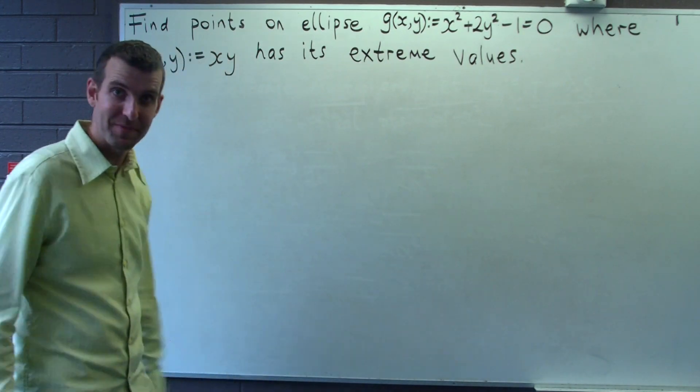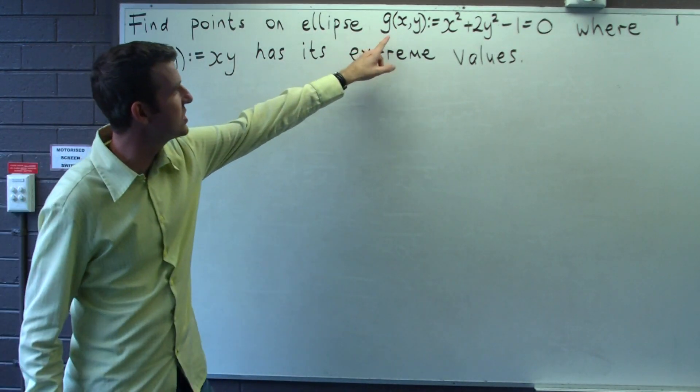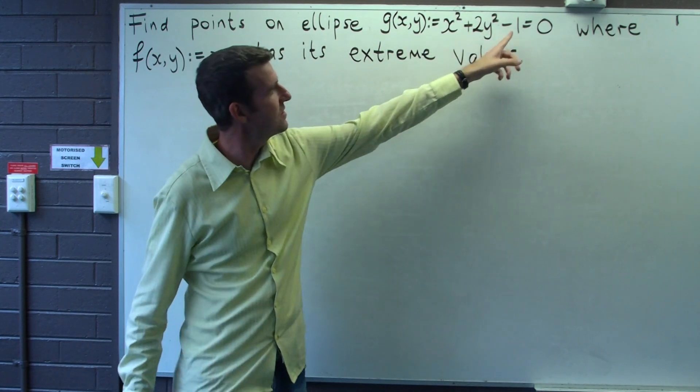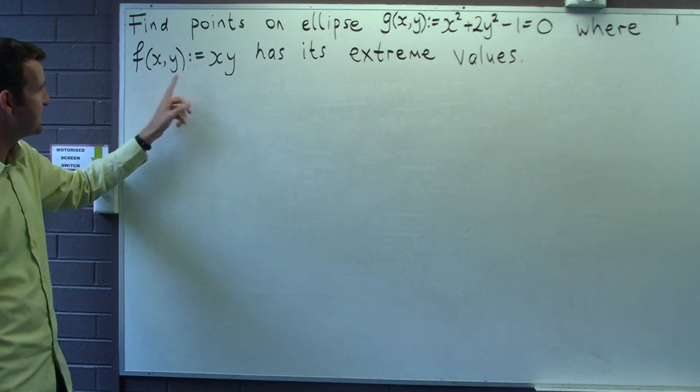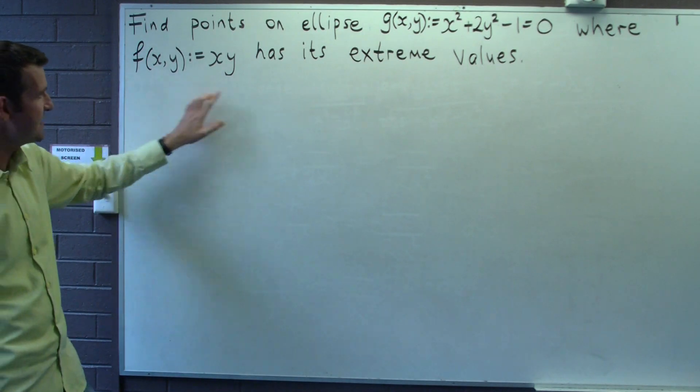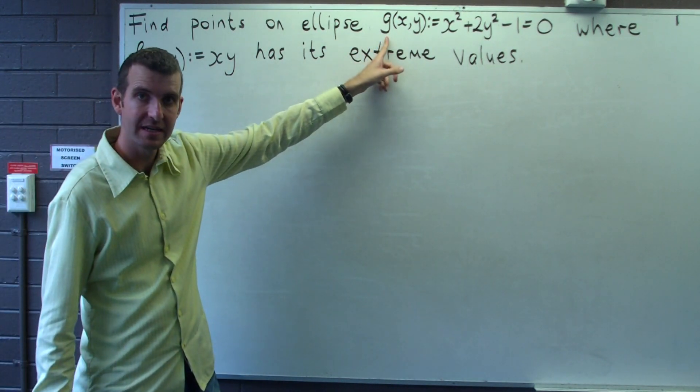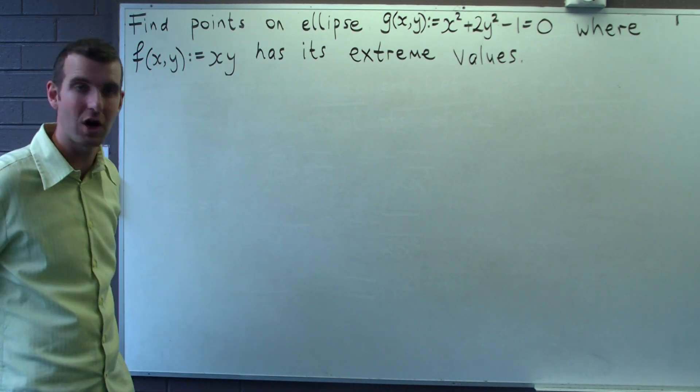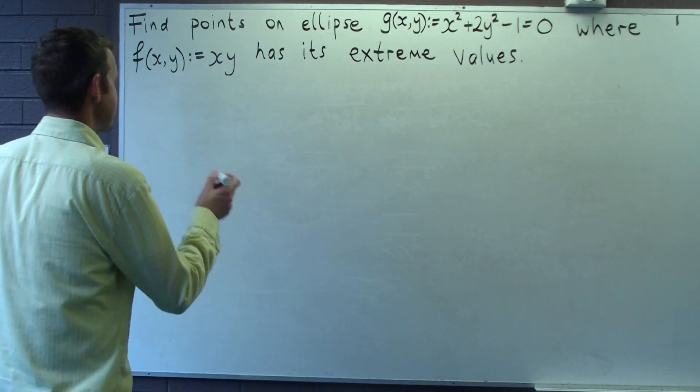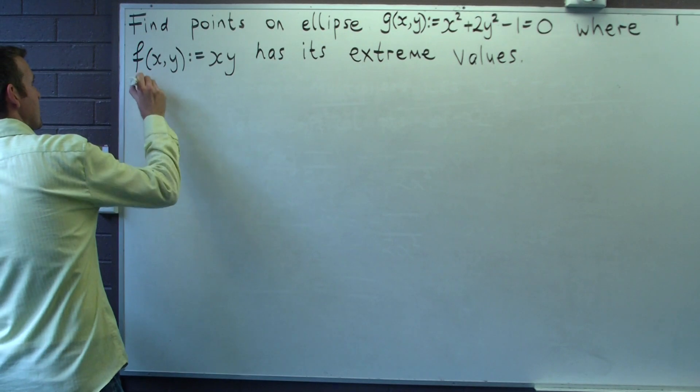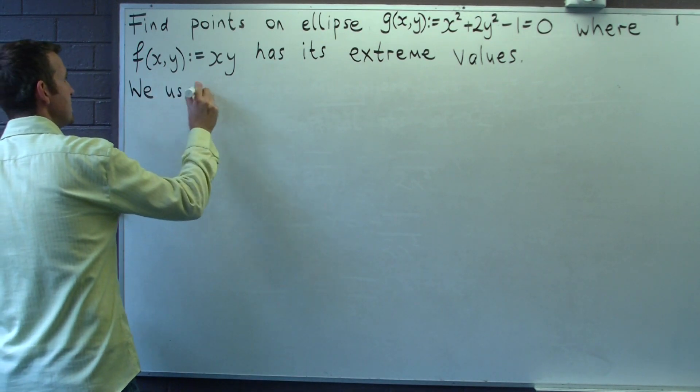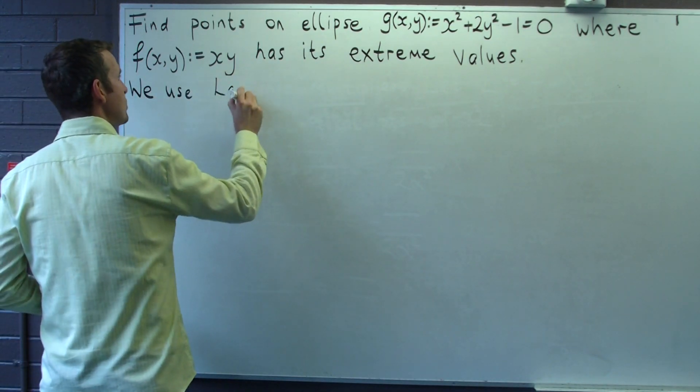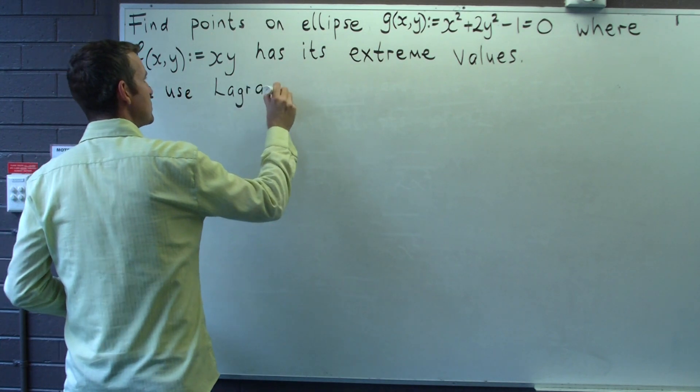Okay, so the notation I've used is g, the right-hand side of this equation, and f is just xy. So the function's f, the constraint is g. This is a Lagrange multiplier type of question, so we use so-called Lagrange multipliers.